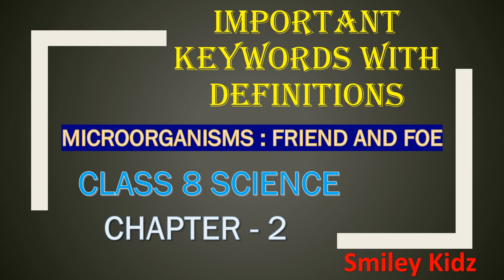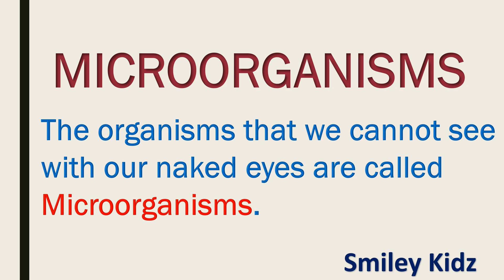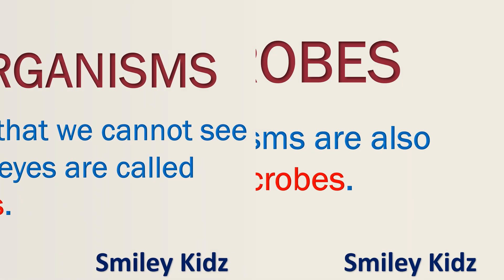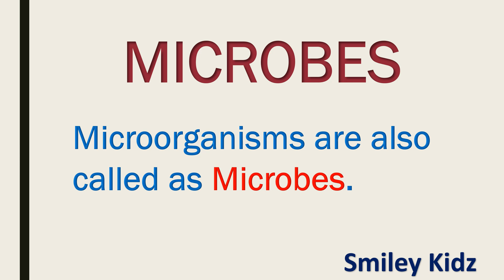Hello everybody, a very warm welcome to Smile Kids channel. Today we are going to discuss the important keywords with definitions of Class 8 Science Chapter 2: Microorganisms, Friends and Foes. Without getting late, let's get started. Microorganisms: the organisms that we cannot see with our naked eyes are called microorganisms. We can see microorganisms with the help of a microscope. Microorganisms are also called microbes.